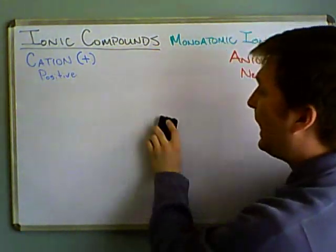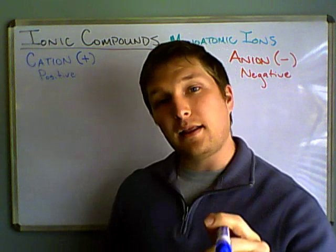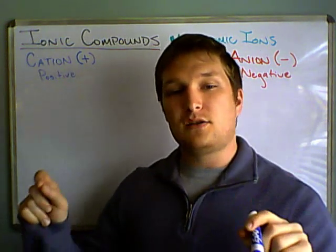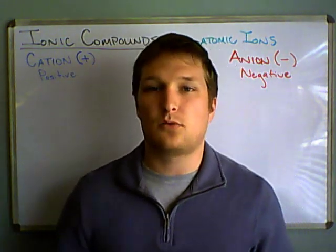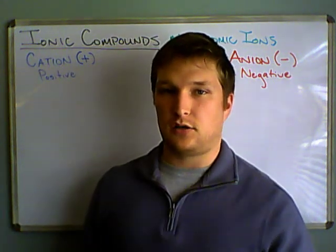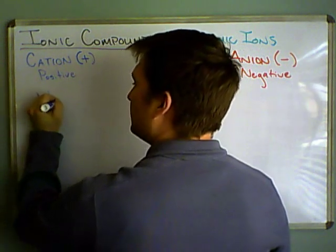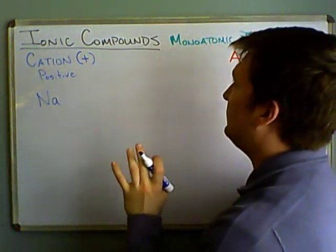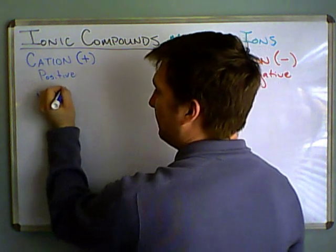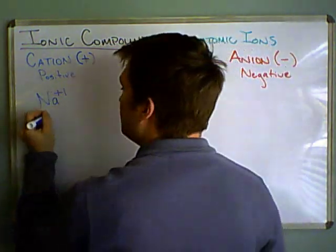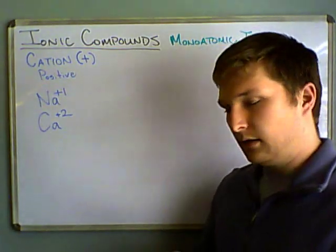Different monatomic ions have different charges. And we're going to get into trends about why that is, why certain ones are maybe plus one, while other ones are plus three. We'll get into that when we talk about electronic structure. But for right now, I'm just going to say, sodium, usually, always, when it's in an ionic form, it likes to lose one electron and be plus one. Calcium likes to lose two electrons and becomes plus two.